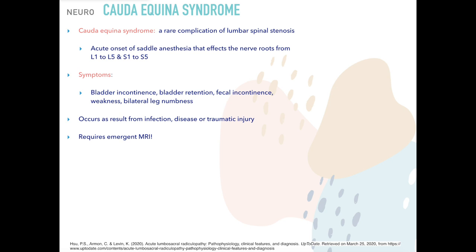Cauda equina syndrome is rare but an emergency. It is a rare complication of lumbar spinal stenosis, affecting nerve roots L1–L5 and S1–S5. Patients have an acute onset of saddle anesthesia, bladder incontinence or retention, fecal incontinence, weakness, or bilateral leg numbness. It generally results from infection, disease, or traumatic injury. This requires emergent MRI.